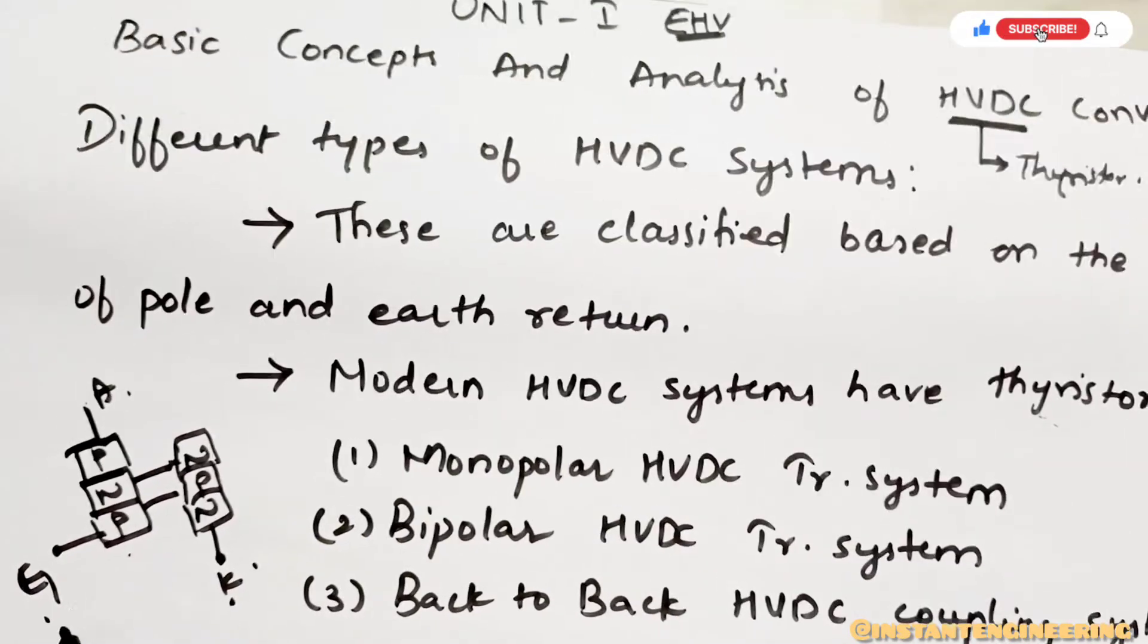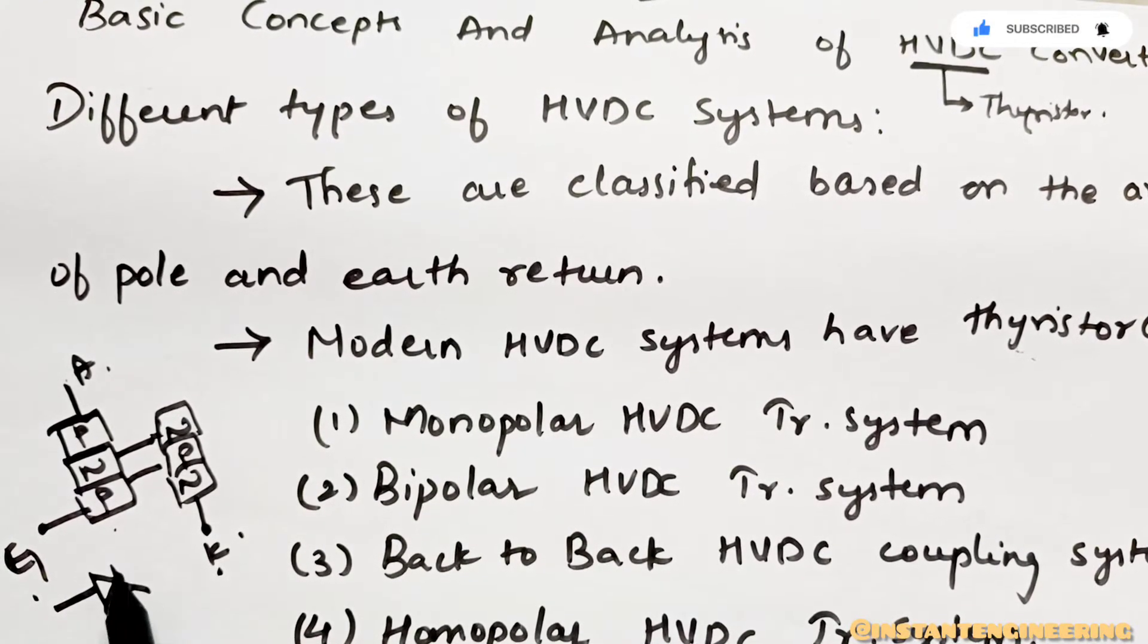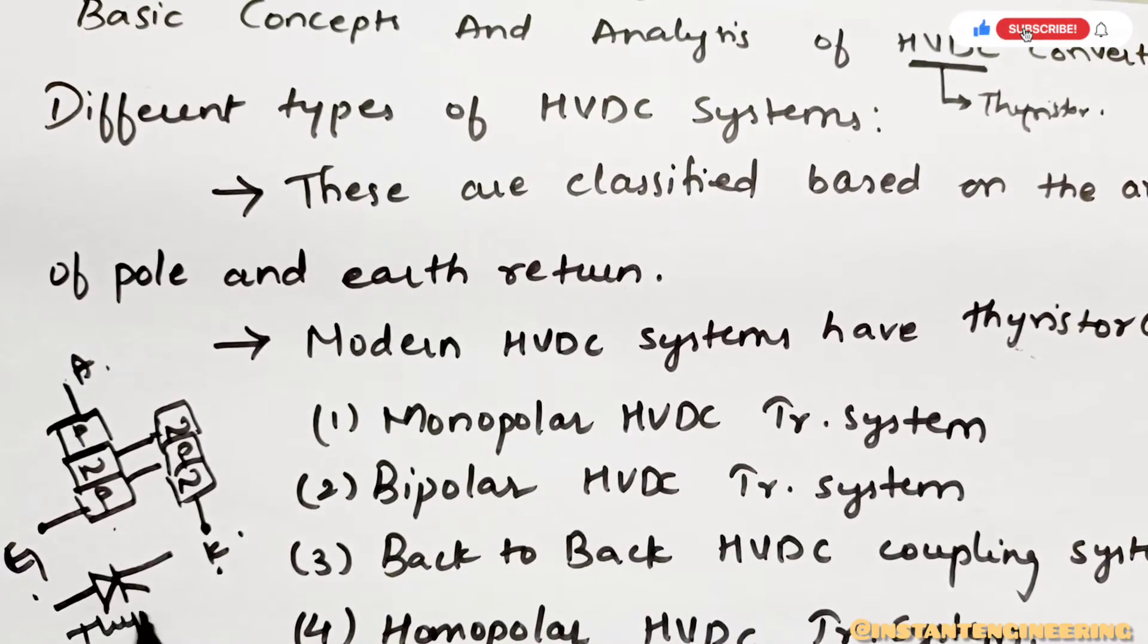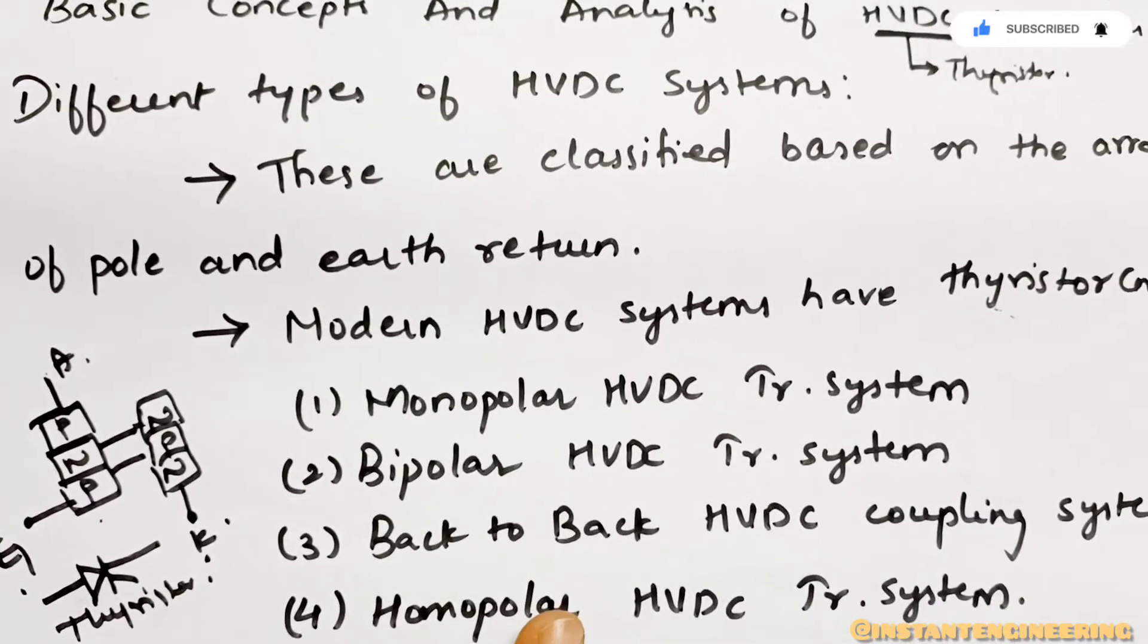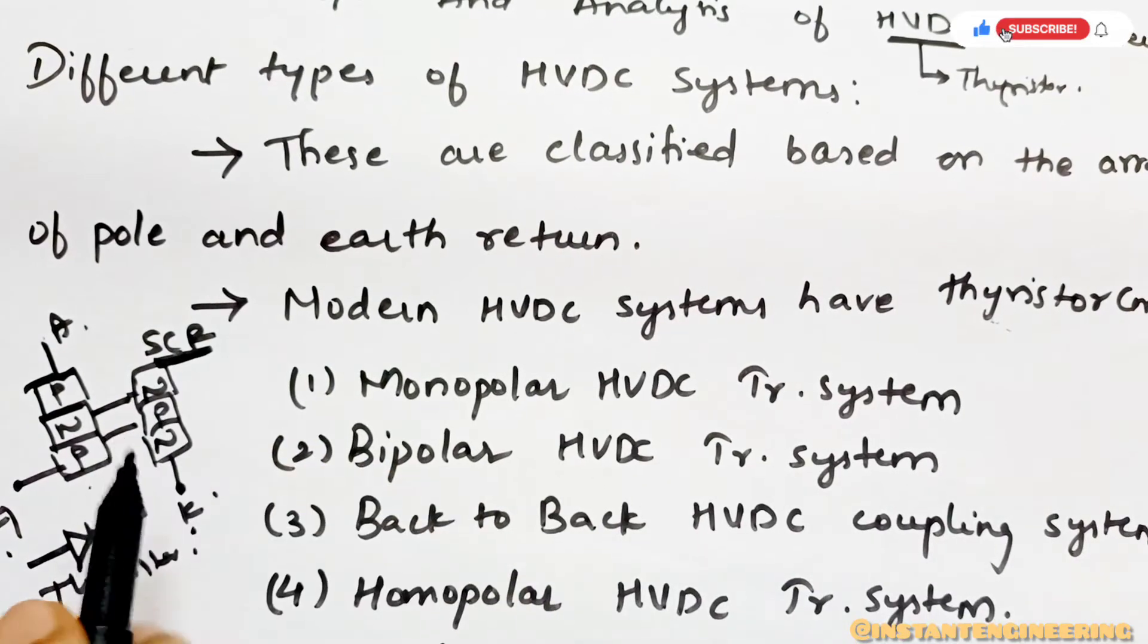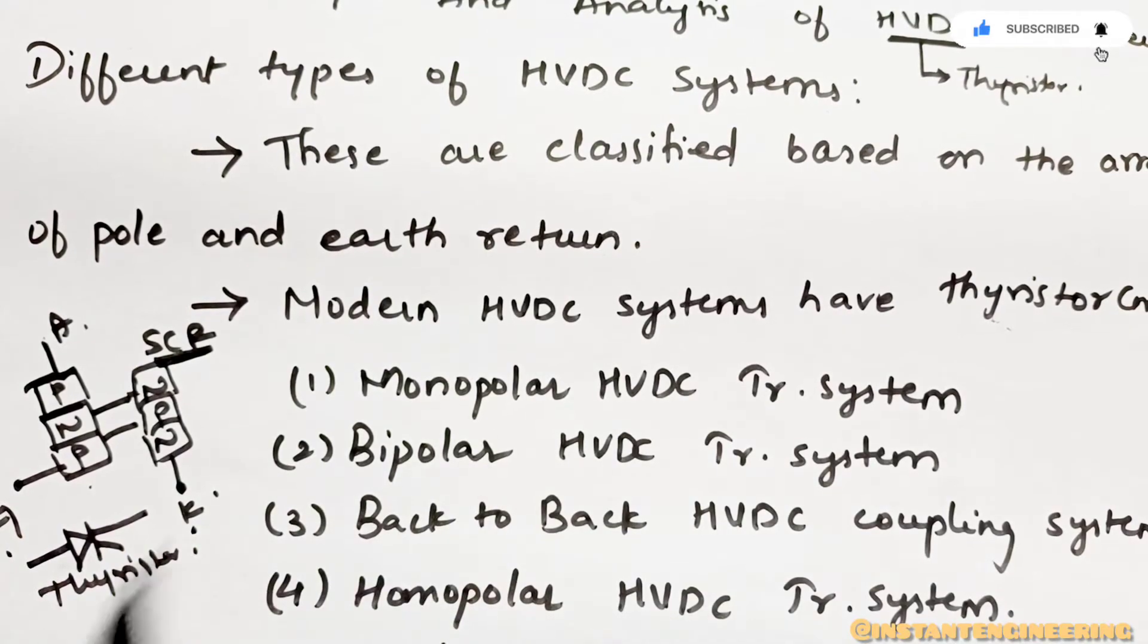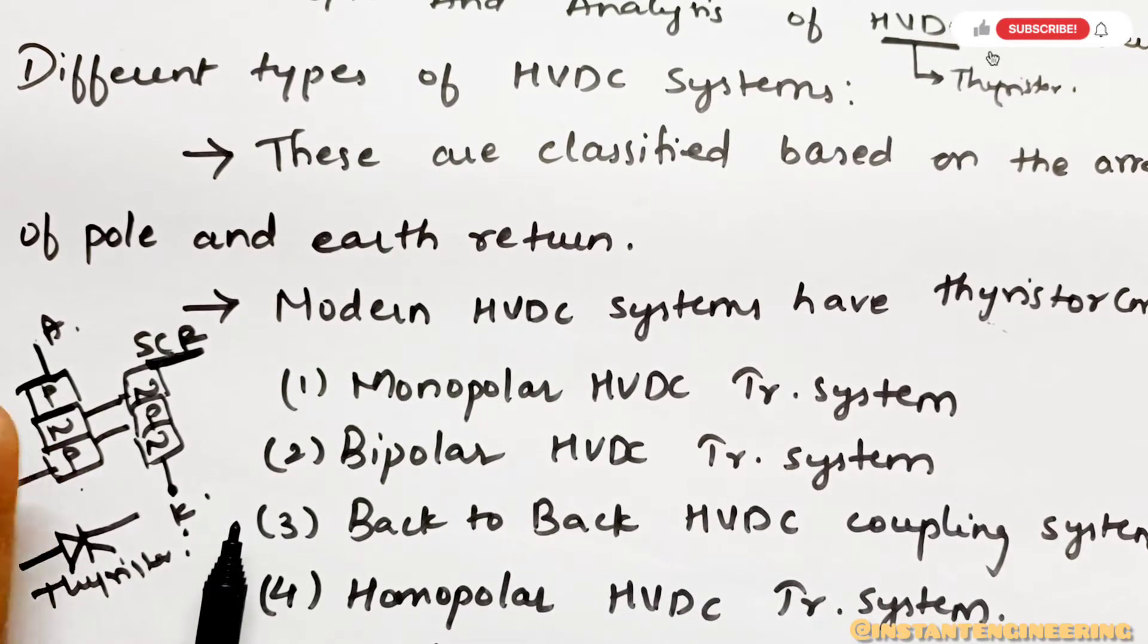Remember this diagram. Generally the symbol of this thyristor will be like this - anode, cathode, and a gate. This is how a thyristor looks. Just remember, for your understanding, generally in vivas they'll ask you what is the most frequently used thyristor: SCR, silicon controlled rectifier. This is the widely used thyristor. Just a brief idea about thyristor.